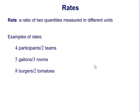Let's talk about rates. A rate is a ratio of two quantities measured in different units. Some examples of rates we can see here are: four participants for every two teams, five gallons for every three rooms, and eight burgers for every two tomatoes.